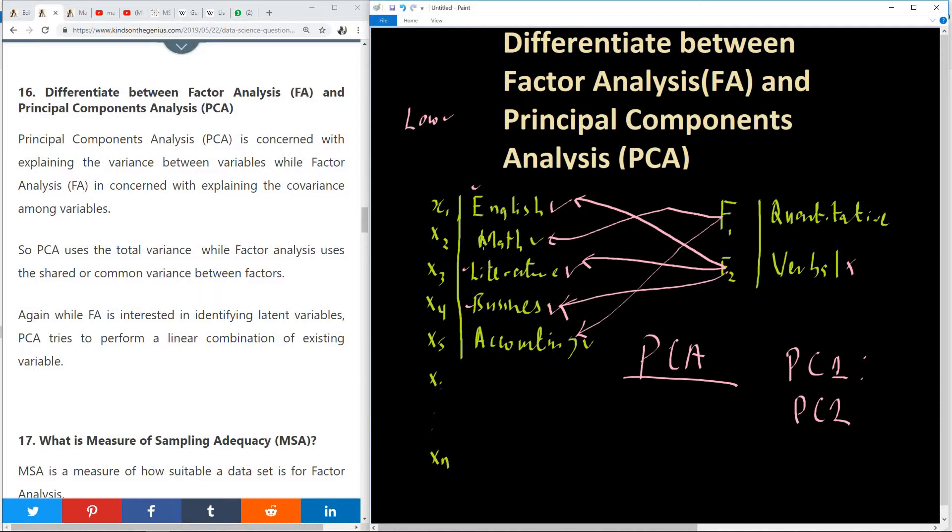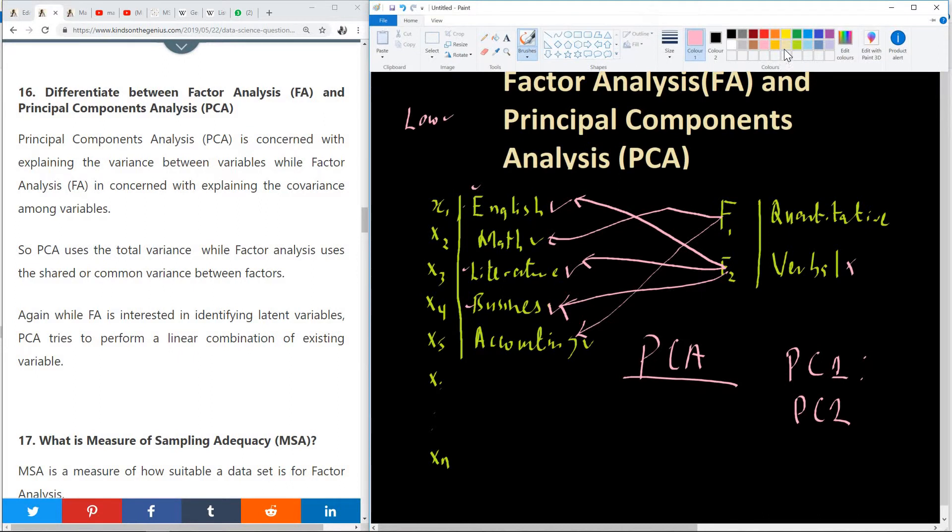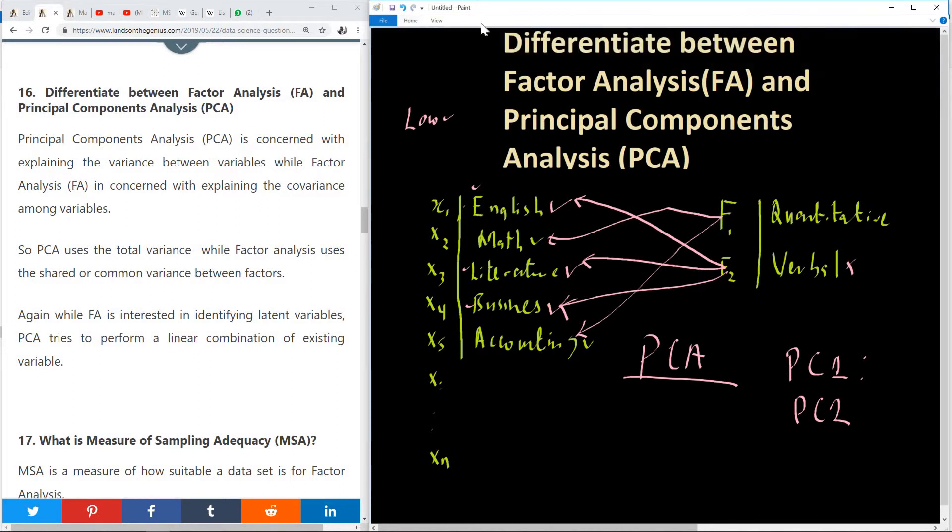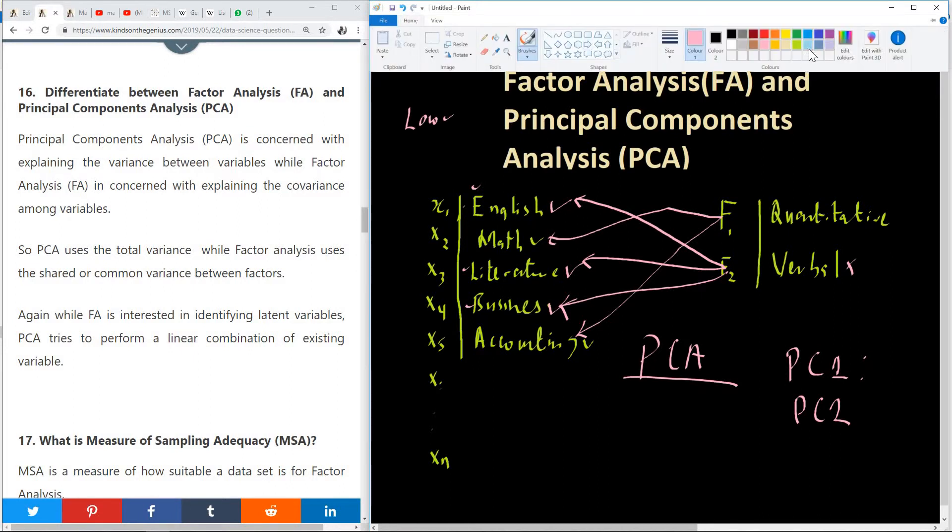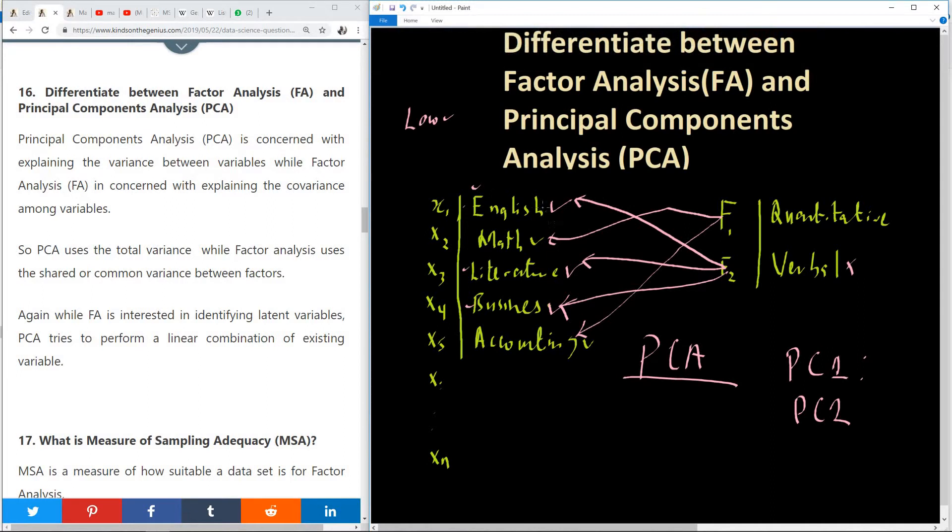But in case of principal component analysis, we use the total variance. So we are trying to calculate what is the relationship between English. So let me use it in terms of PC1, right from PC2. So we are asking ourselves, let me use another color of paint so that I can make it clear.